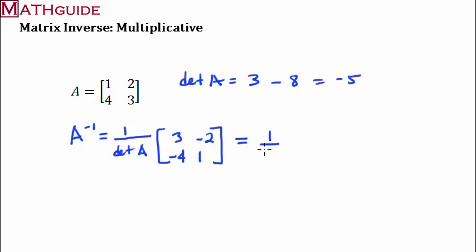All right. So this means we're going to take 1 over negative 5, and we're going to multiply it by this matrix. Okay. So if we do that, we're going to take negative 1 fifth times 3, that would be a negative 3 fifths. Take negative 1 fifth times 2, that's 2 fifths. Take a negative 1 fifth times 4, that's 4 fifths. And we take negative 1 fifth times 1, that's a negative 1 fifth.